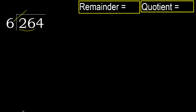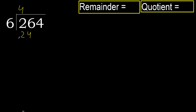6 multiplied by 5 is 30, which is greater. 6 multiplied by 4 is 24. 24 is not greater, so we use 4. 26 minus 24 is 2.